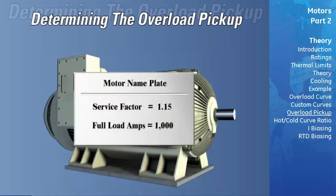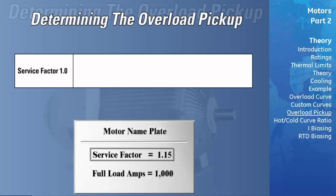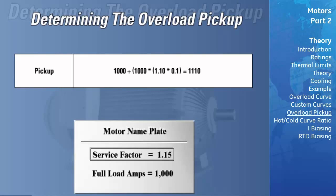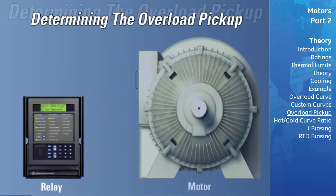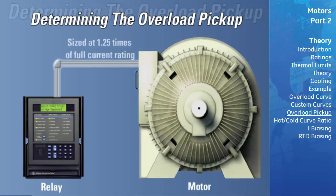Determining the Overload Pickup. The protection engineer will typically set the overload pickup to 100% of the motor's capability. For motors with a 1.15 service factor, a maximum pickup of 125% of the full load current can be selected, while the maximum pickup for 1.0 service factor motors is 115% of full load current. It is common practice to set the pickup to no more than the rated motor full load current plus no more than 10% of the service factor, unless there is an independent measure of motor temperature such as stator RTDs. Note that the motor feeder cables are normally sized at 1.25 times the motor's full load current rating, which would limit the motor overload pickup setting to a maximum of 125%.